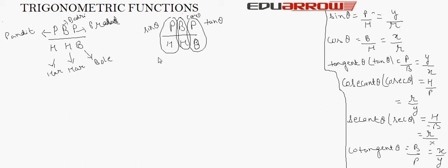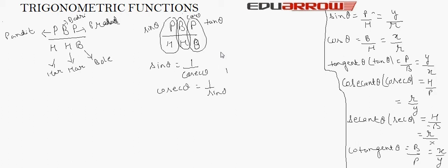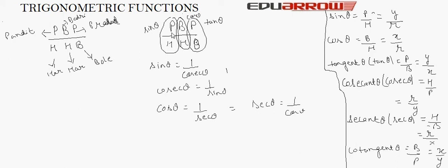To find cosec theta, just take the inverse of sin theta: sin theta equals 1 upon cosec theta, or cosec theta equals 1 upon sin theta. Similarly, cos theta equals 1 upon sec theta, or sec theta equals 1 upon cos theta. So first remember sin and cos theta, then their reciprocals give cosec and sec theta. Sec theta will be H over B, and cosec theta will be H over P.